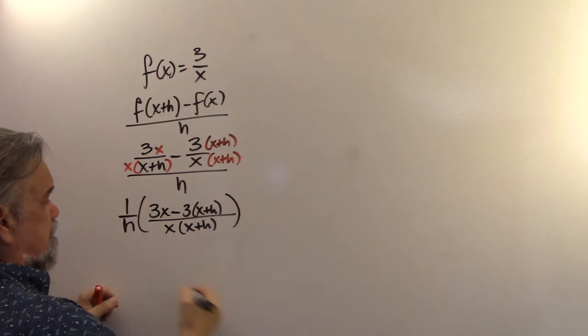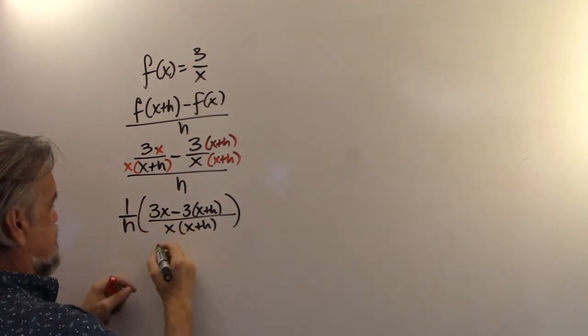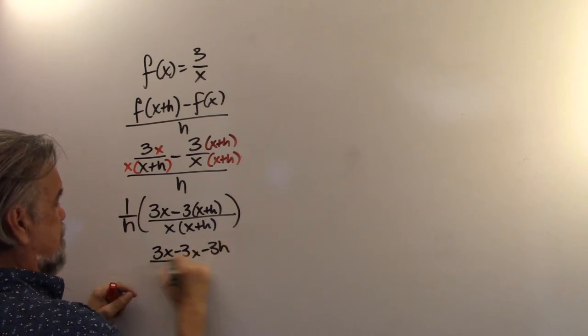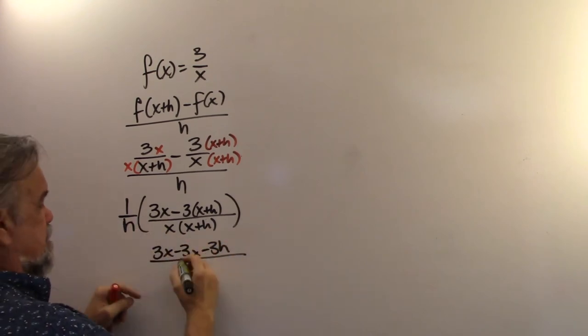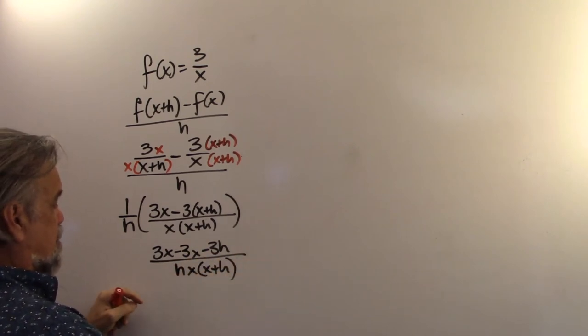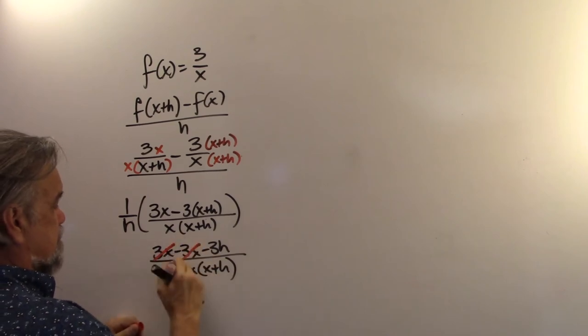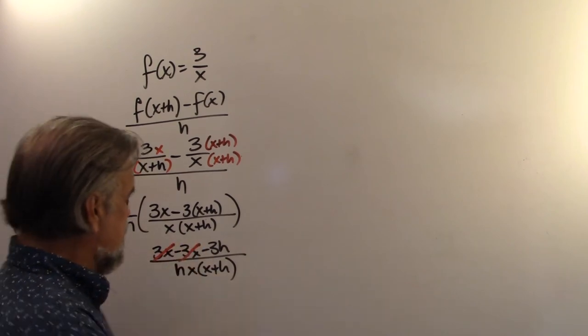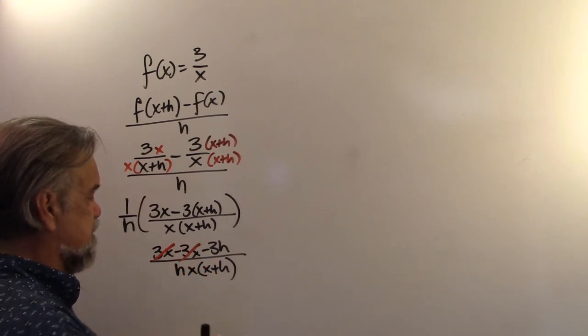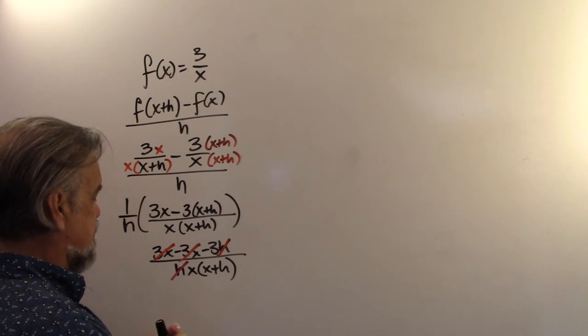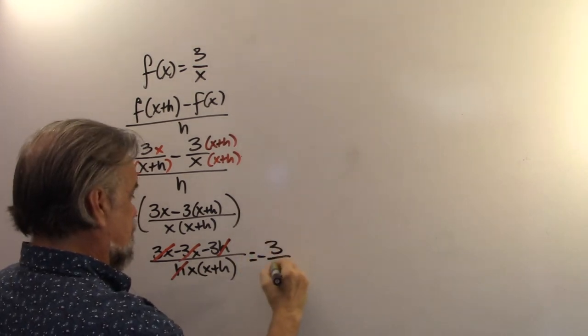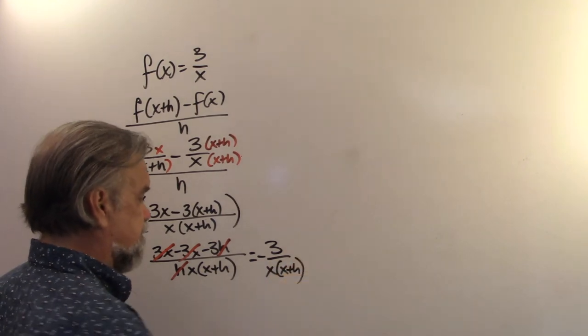And now I'm going to say, so that's 3x minus 3x minus 3h over, and I'm just going to include this h down here, h times x times x plus h. Oh, my goodness. The 3x's, they take care of each other. And I'm left with negative 3h over h times x times x plus h. And now I can cancel out the h's. And I'm left with negative 3 over x times x plus h.